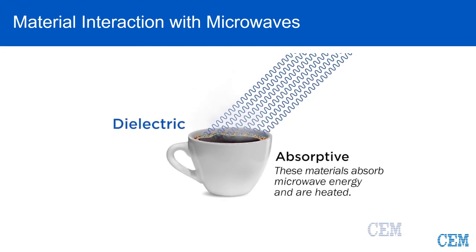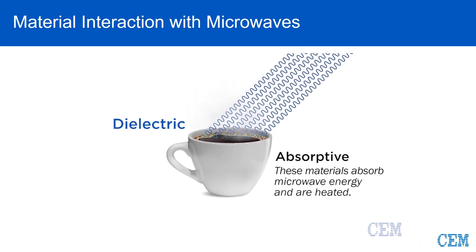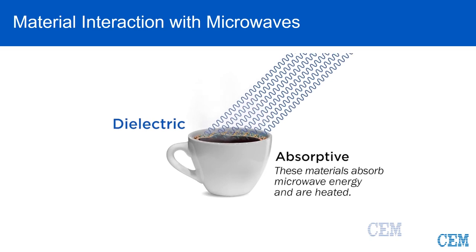You do not want to have these materials present in the cavity as either part of the vessel or turntable, for example. The materials can change the microwave pattern and therefore create hot and cold spots in the microwave cavity, which will lead to uneven heating.